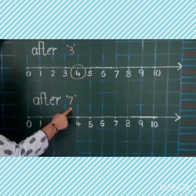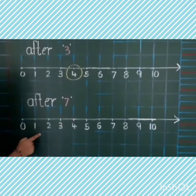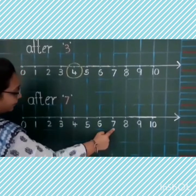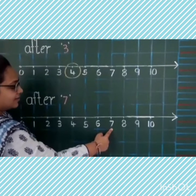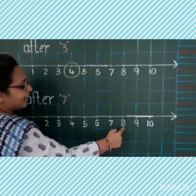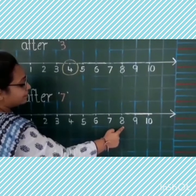And where is seven on the number line? Here. And what comes after seven? Seven ke baad kya aata hai? Yes. Eight. Eight comes after seven. So, we will mark eight.